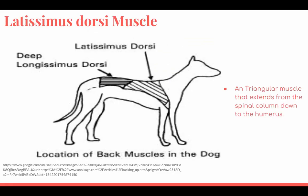Latissimus dorsi muscle — a broad triangular muscle that extends from the spinal column down to the humerus. Its function is to flex the shoulder and help propel the body forward.